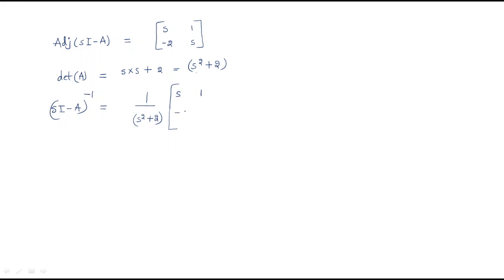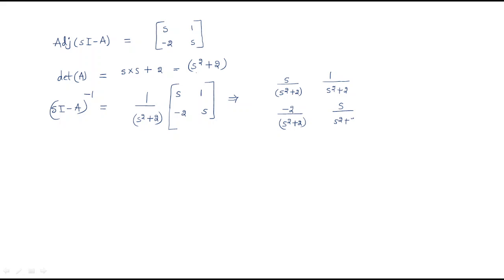Therefore, (sI - A)⁻¹ = (1/(s²+2)) · [s, 1; -2, s], giving the matrix: [s/(s²+2), 1/(s²+2); -2/(s²+2), s/(s²+2)]. This is (sI - A)⁻¹.